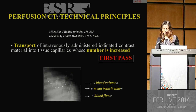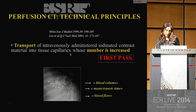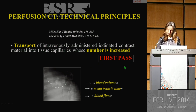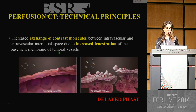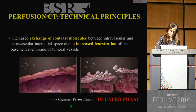To better understand the technical principles of perfusion CT, we need to be aware of two characteristics of tumoral vessels. The first one is the increased number of tissue capillaries through which the contrast material is transported, corresponding to the first-pass imaging, with calculation of parameters: blood volume, entrance time, and blood flow. The second one is the increased fenestration of the basement membrane of tumoral vessels, responsible for an increase in exchange of contrast molecules between intra- and extravascular interstitial space, corresponding to capillary permeability on the delayed phase of perfusion imaging.